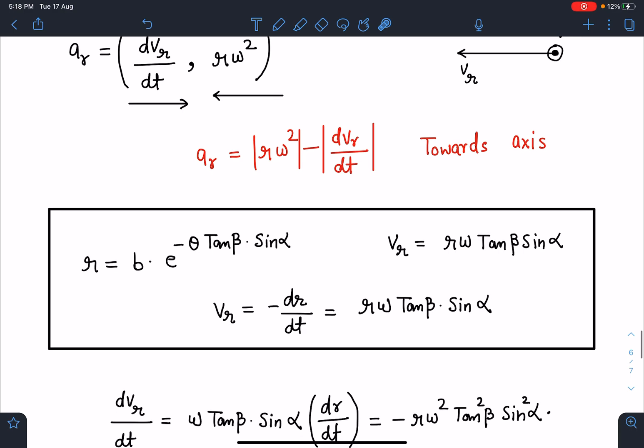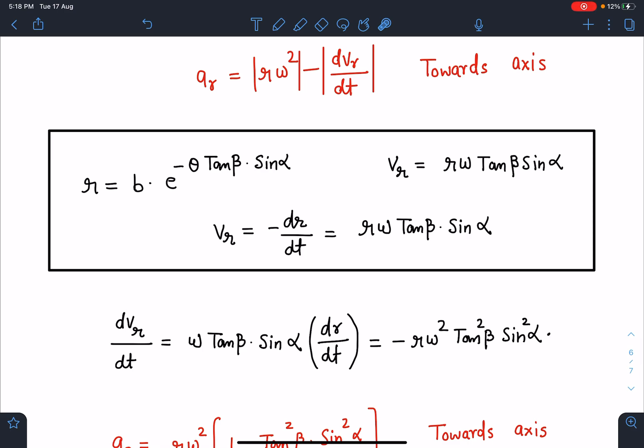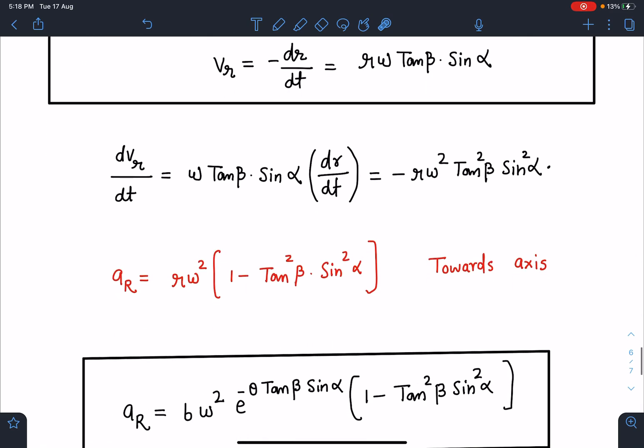These are the previous results we derived. r is known: b times e to the power minus θ tan β sin α. V_R we evaluated earlier: rω tan β sin α. If I differentiate V_R, dV_R/dt equals ω tan β sin α times dr/dt. I can substitute dr/dt here. I'm getting this value as minus rω² tan² β sin² α.